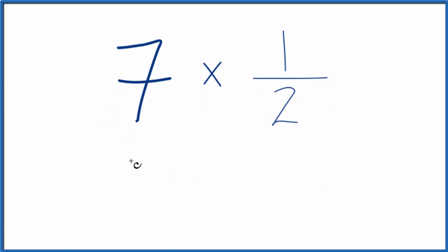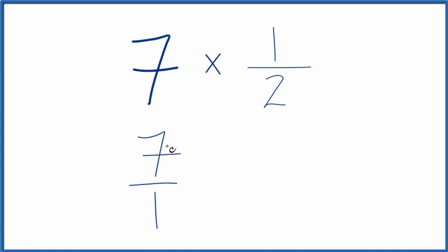Maybe an easier way would be to take 7 and think of it as 7 over 1. 7 divided by 1, that's still 7, but now we have this fraction here, and we can multiply that times 1 half.